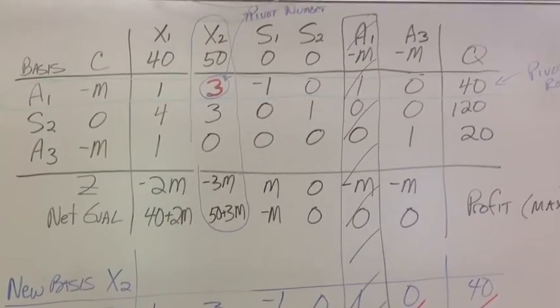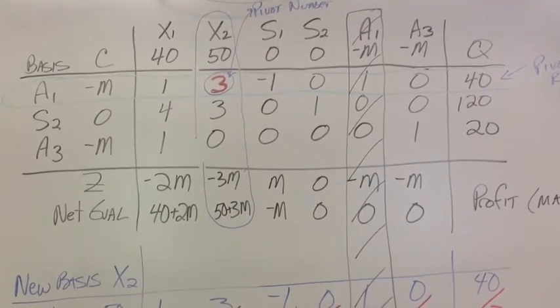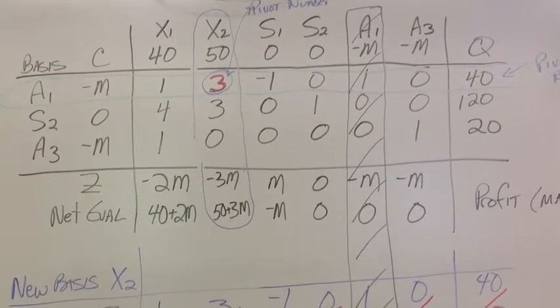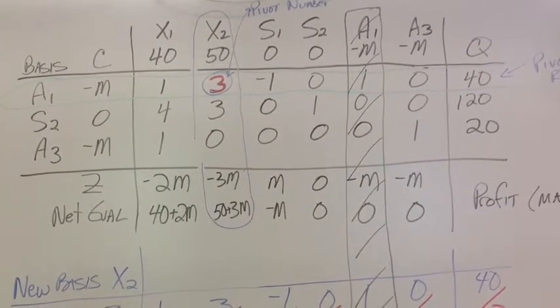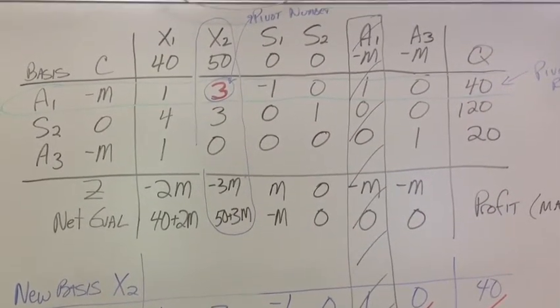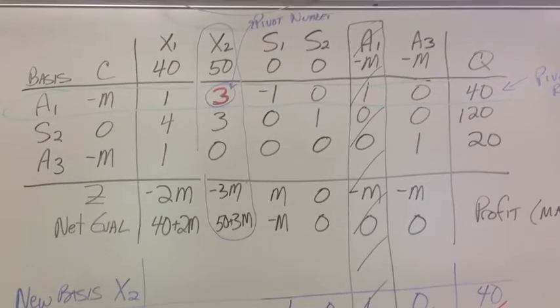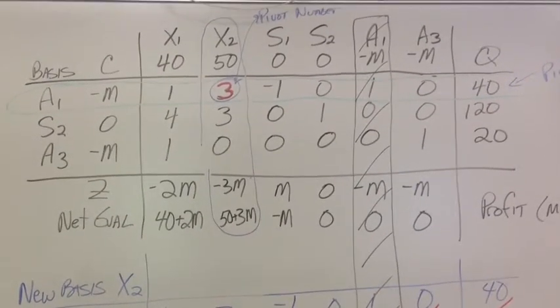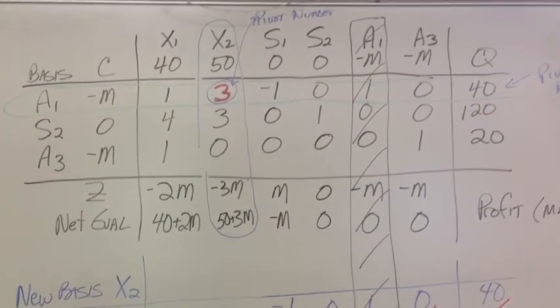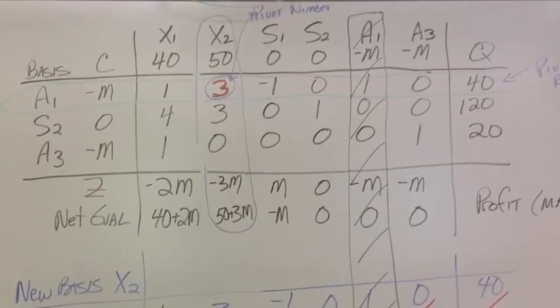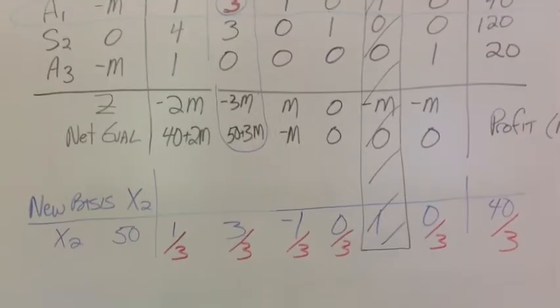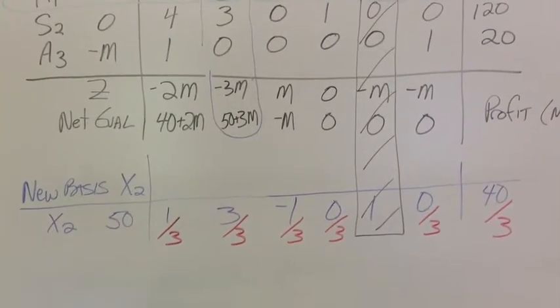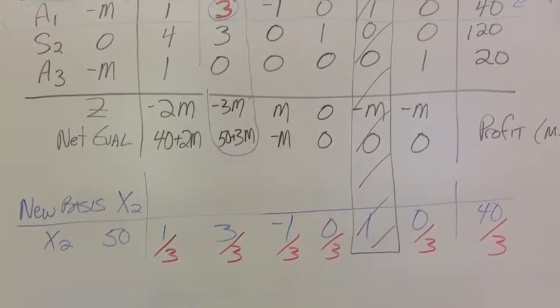You notice I have crossed out the a1, negative m. Once an artificial variable leaves the basis, it was just that, an artificial variable so we could start at 0. So on the x2 axis, we must no longer be at 0, so we no longer need that variable in our basis. Good news is, we no longer have to track it, and that's why I have that column xed out here.